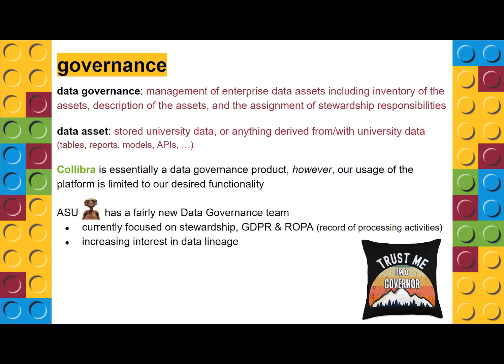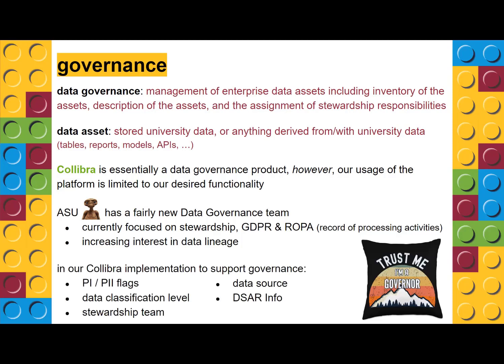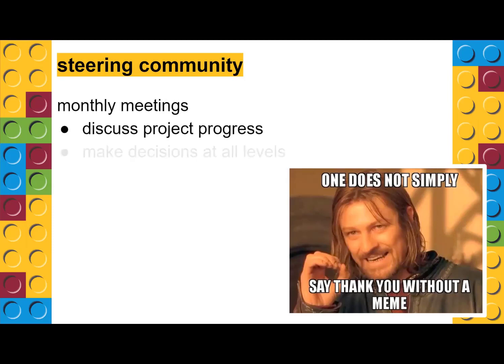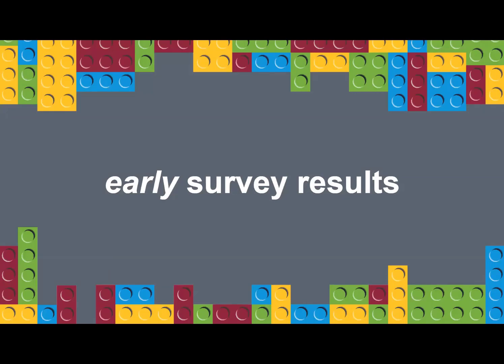ASU's Enterprise Technologies has a fairly new data governance team doing a lot of this other work — stewardship, GDPR, and they've become interested in data lineage recently. We're going to be working with them to support their efforts. Right now in the metadata we have PI flags, PII flags, classification level, stewardship team, data source, and a DSAR info column. Those are all there primarily to support the data governance aspect. We also have the steering community, which has monthly meetings where we discuss project progress and make decisions on interface, content, strategy, and roadmap. It's open to anyone — feel free to join us.